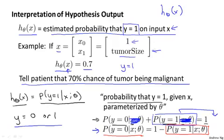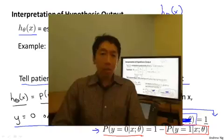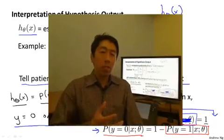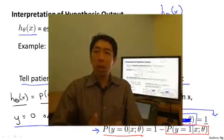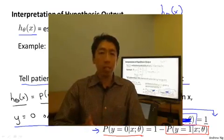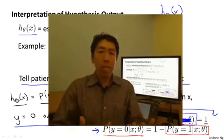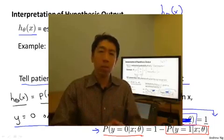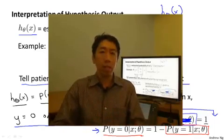So you now know what the hypothesis representation is for logistic regression. We've seen what the mathematical formula is defining the hypothesis for logistic regression. In the next video, I'd like to try to give you better intuition about what the hypothesis function looks like. I want to tell you about something called the decision boundary, and we'll look at some visualizations together to try to get a better sense of what this hypothesis function of logistic regression really looks like.